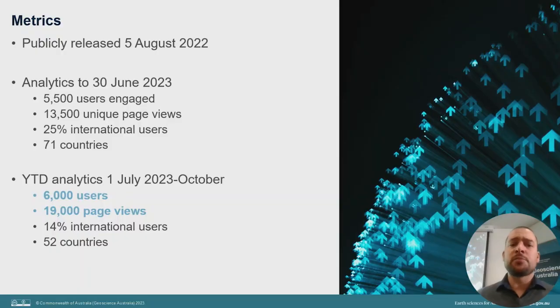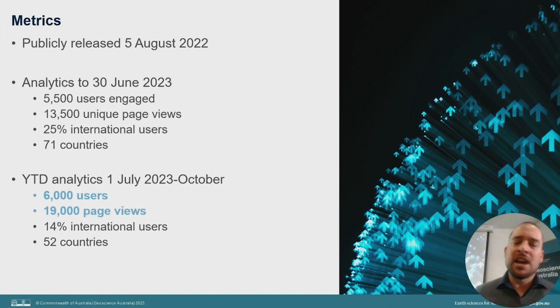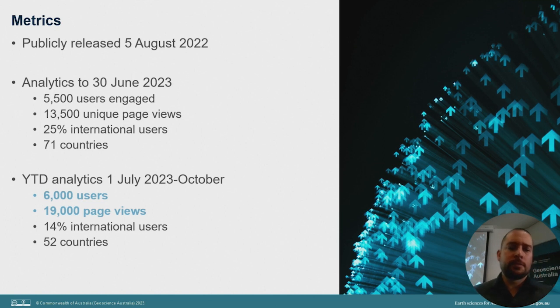Now a brief look at some metrics. AMSIS was launched to coincide with the release of the first proposed area for offshore renewable energy, announced by the Minister of Climate Change and Energy on the 5th of August 2022. In summary, AMSIS has been accessed by 5,500 users since launch, across 13,500 unique page views, with 75% domestic users and 25% international across 71 countries. There are clear peaks of interest following offshore renewables announcements, with approximately 50% of traffic landing on the renewables pages. This year to date, we've already exceeded the total user number with over 6,000 users identified by October.